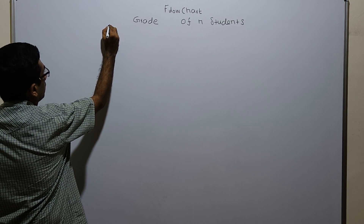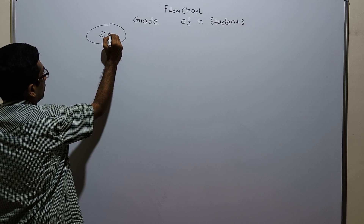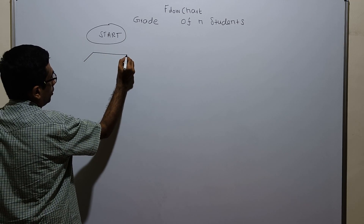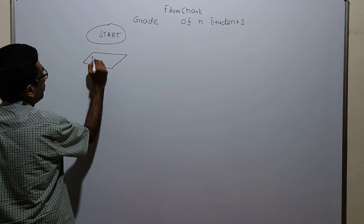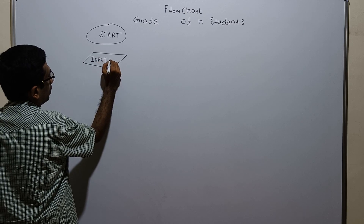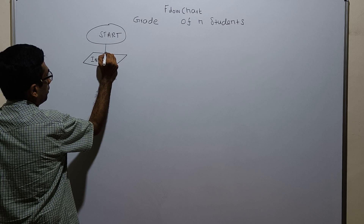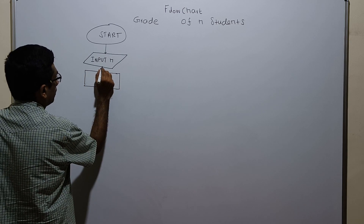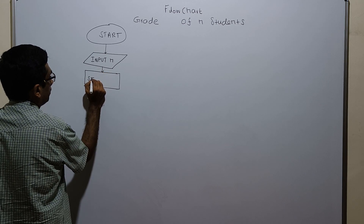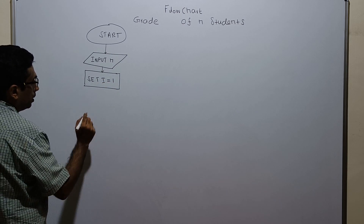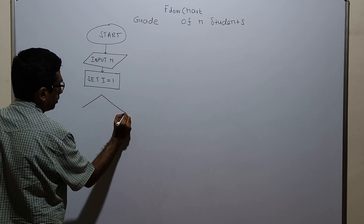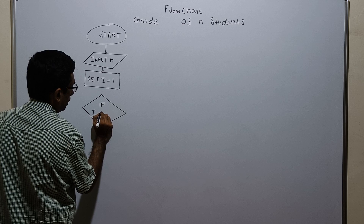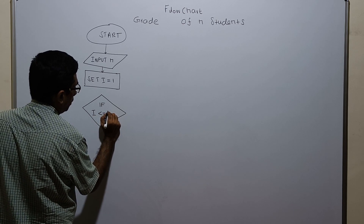This is the logical chart of the flowchart. I am applying the range from the user input n. I am utilizing a variable and setting i equal to 1. Then I am checking the condition if i is less than or equal to n.